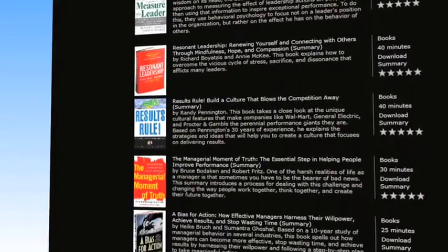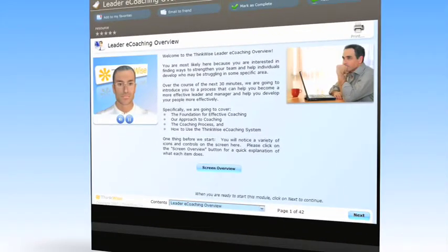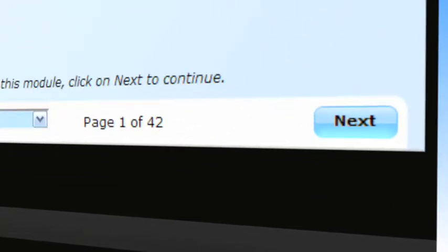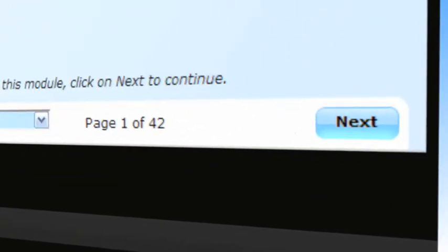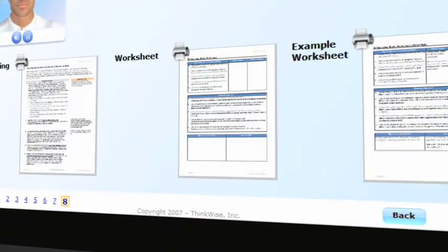The fourth element of ThinkBox is that we have learning materials that can be integrated right in with your natural work. For example, we have leader e-coaching modules that provide direct advice and step-by-step coaching guides to help a manager have a difficult discussion with one of their employees. We provide the coaching guide that you can download and review, as well as a worksheet that can be used as part of that coaching discussion.